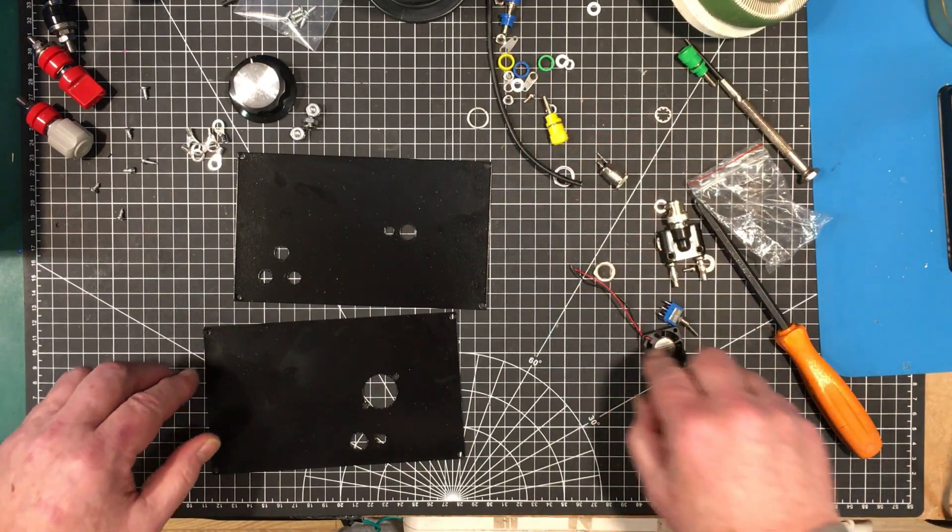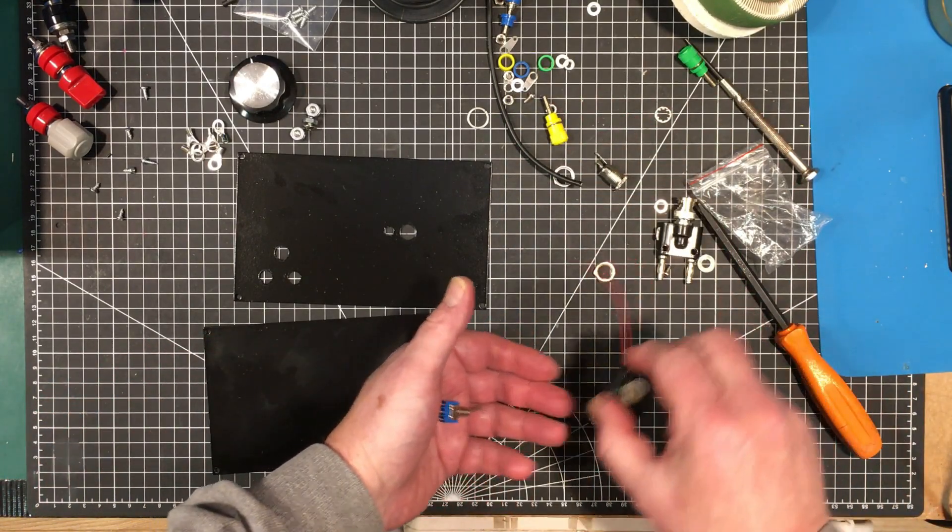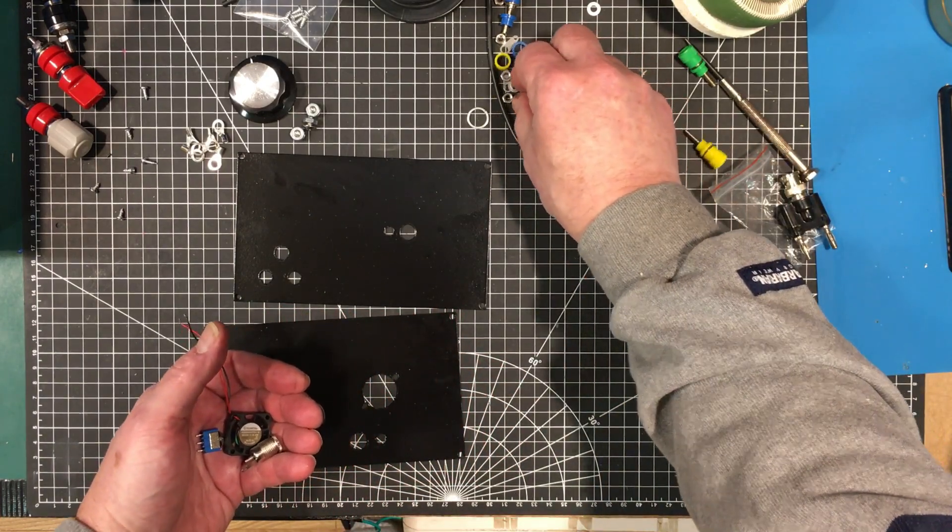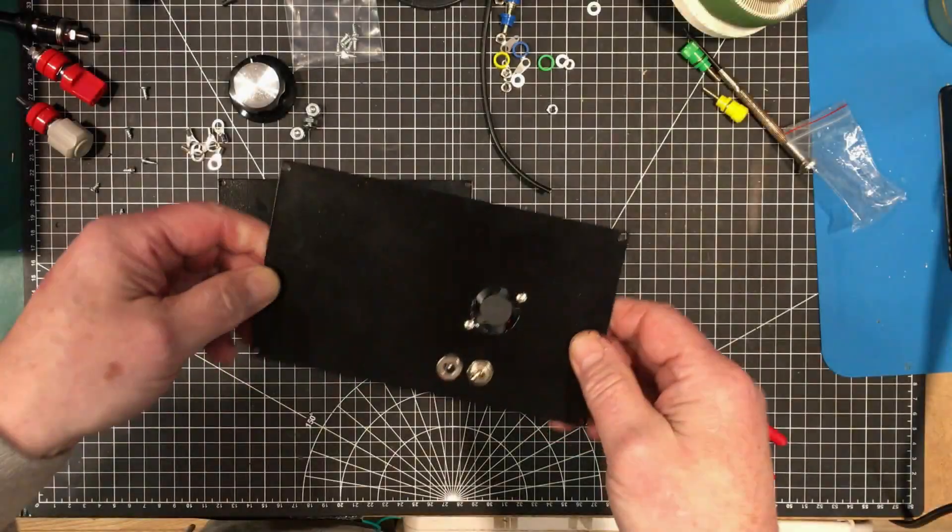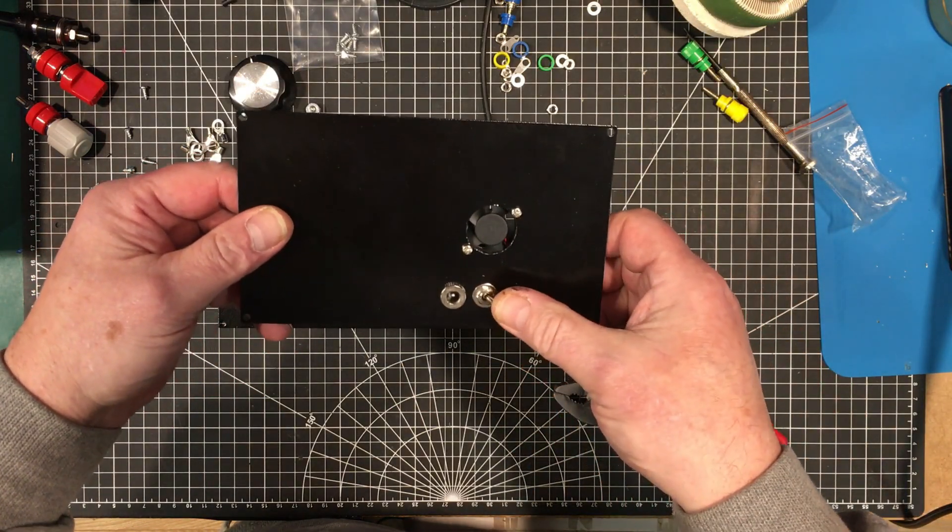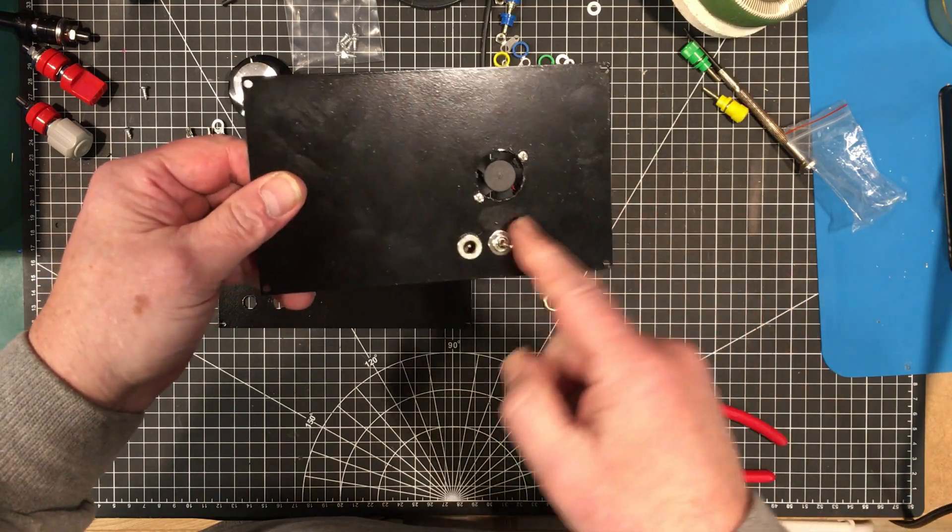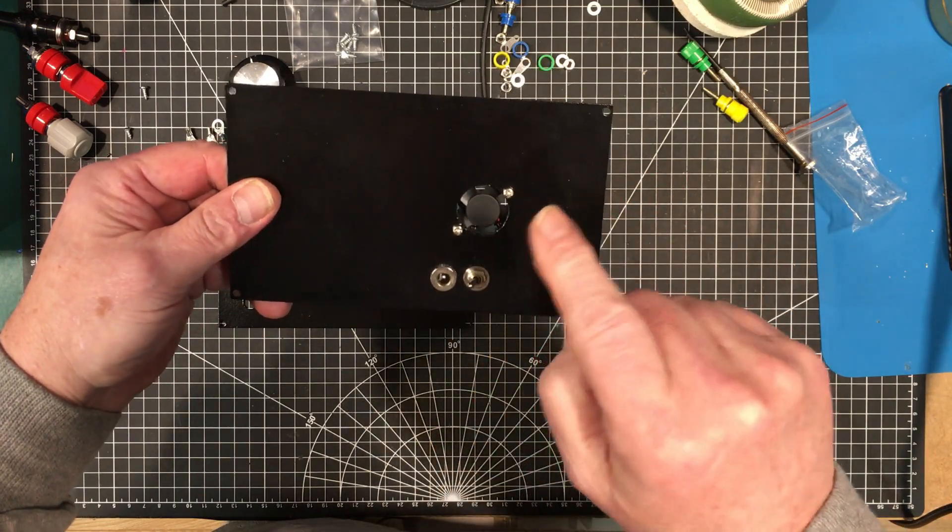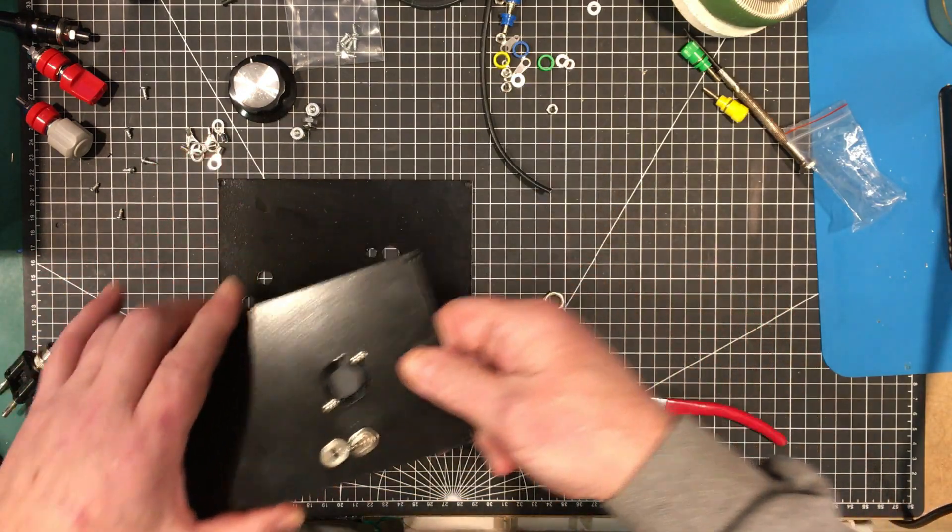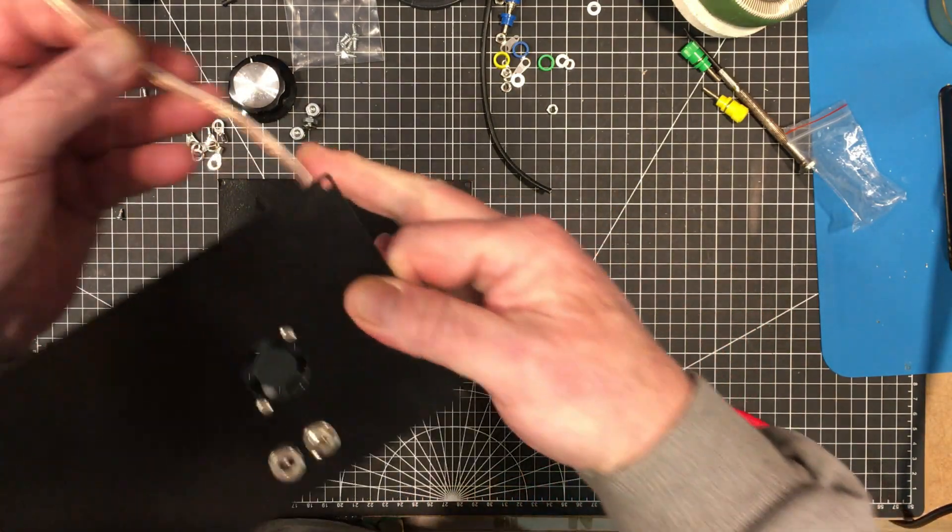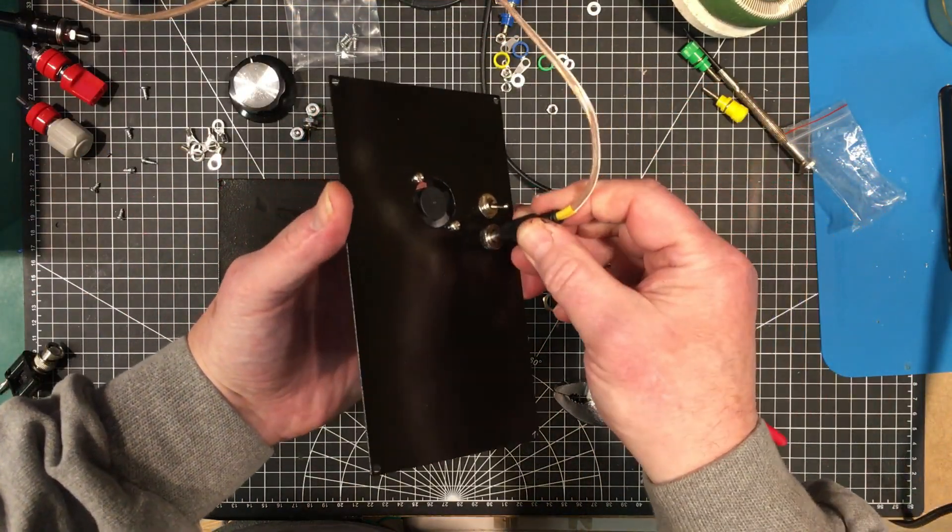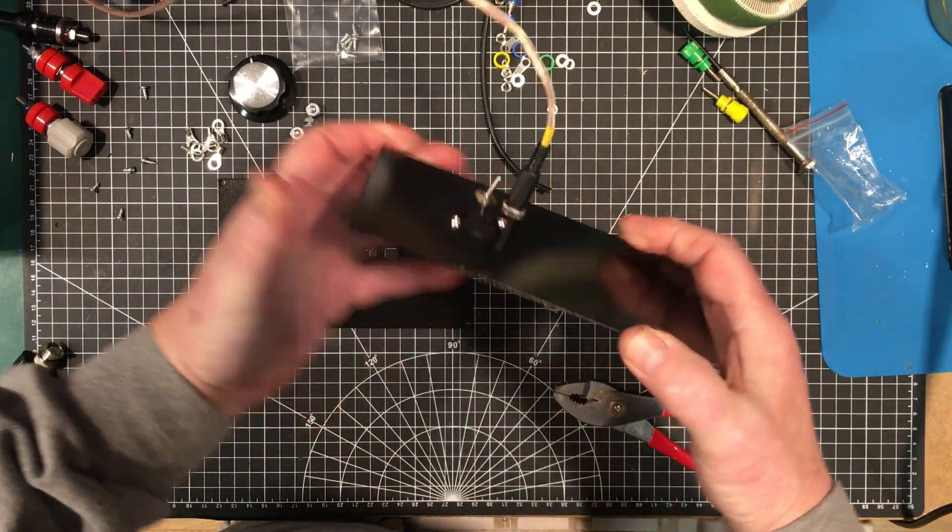I'm going to do the back one first and get that wired up. Here's the back panel, it's done. Got a switch on in this direction, should be off in this direction. Fan's mounted and it's all wired up. Let's plug it in and turn it on.